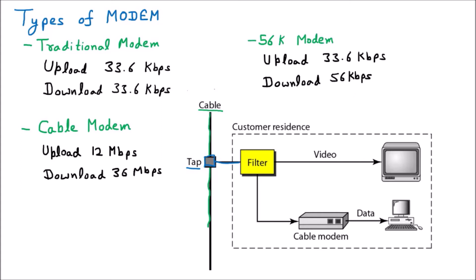The boundary shown in dots represents the customer residence — where the customer resides, meaning the home. The cable is coming into the home. At the customer's home, one filter is applied. This filter splits — meaning it divides — the data coming in. From the tap to our home, the incoming data is divided into two separate lines.